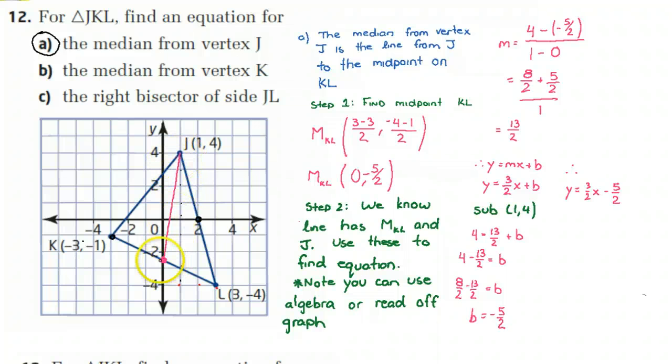If I want to find the equation of this pink line, I'm going to find the slope here. So we're going to find the slope between the midpoint of KL and J, which is right here. So we get 4, which is this value, minus minus 5 over 2, which is the Y value of here, over 1, which is the X value of J, minus 0, which is the X value of MKL. And of course, I get the slope of positive 13 over 2, which I feel wonderful about because this slope is obviously positive.